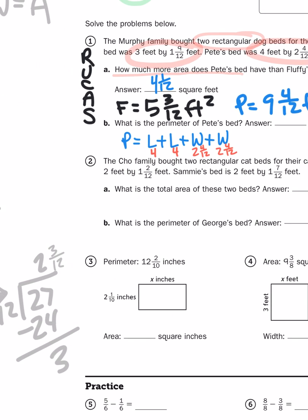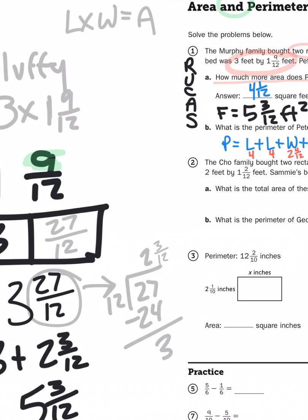So I know that the length of Pete's bed is 4 and the width is 2 and 4 twelfths. So I'm going to define the perimeter by adding 4 plus 4 plus 2 and 4 twelfths plus 2 and 4 twelfths. And again, when I add numbers together, specifically multi-place value numbers, I want to line them up.